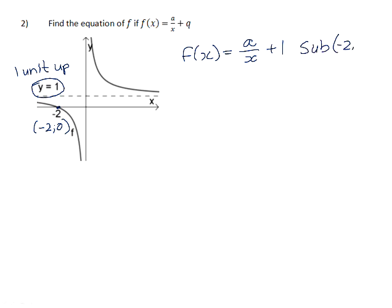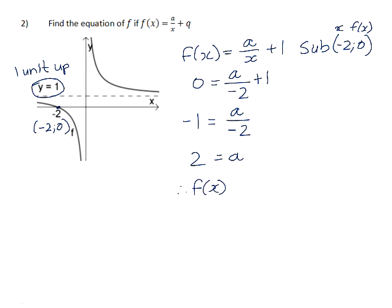If we now substitute the point that we were given in place of x and f of x, we will have zero is equal to a over negative two plus one. Subtract one from both sides, and we get the value of a to be positive two. So therefore, f of x is equal to two over x plus one.